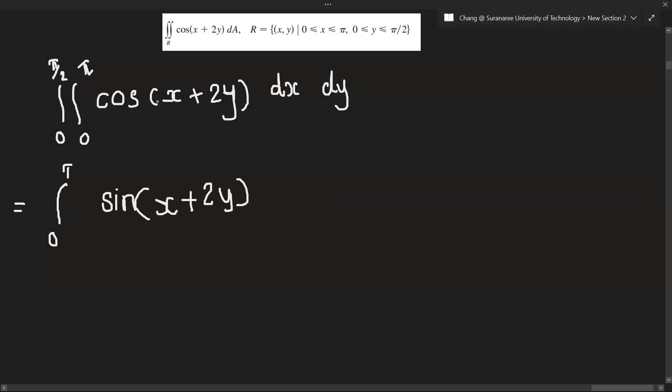And there is no coefficient, there is kind of like coefficient 1, so we can just divide by 1, but we all know that the denominator is 1 so I will not write here. So the value of x ranges from 0 to pi, and we have to integrate with respect to y again.